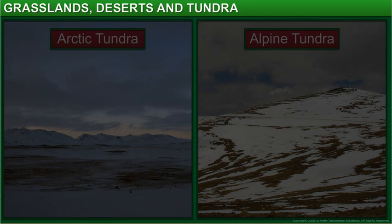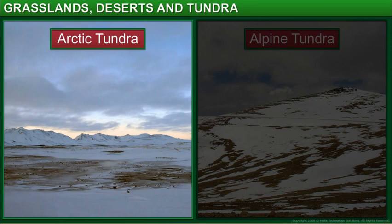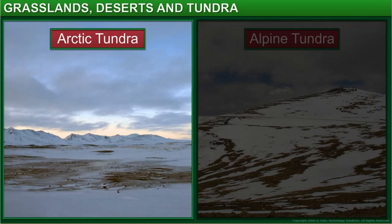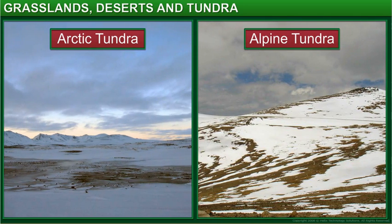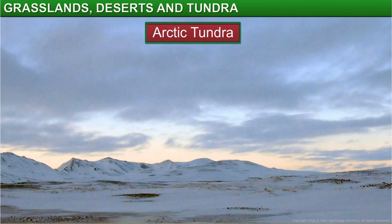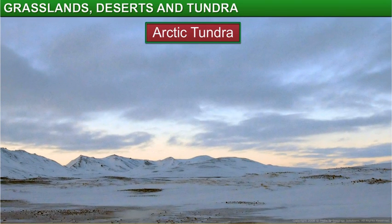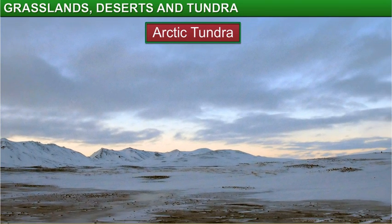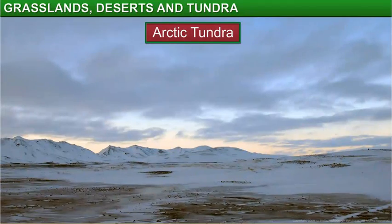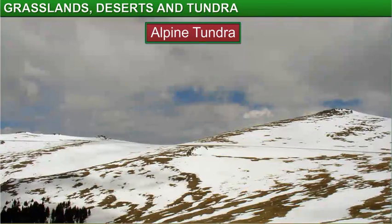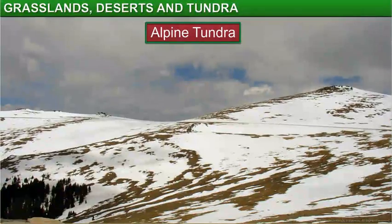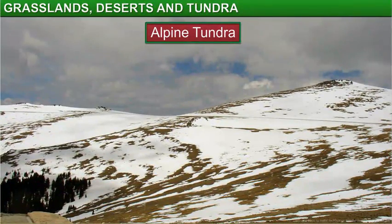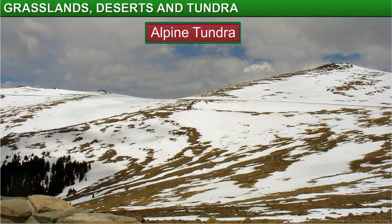There are two types of tundra regions in the world: Arctic Tundra and Alpine Tundra. The Arctic Tundra is mainly located at the top of the world around the North Pole. The Alpine Tundra can be found in mountainous regions all around the world.